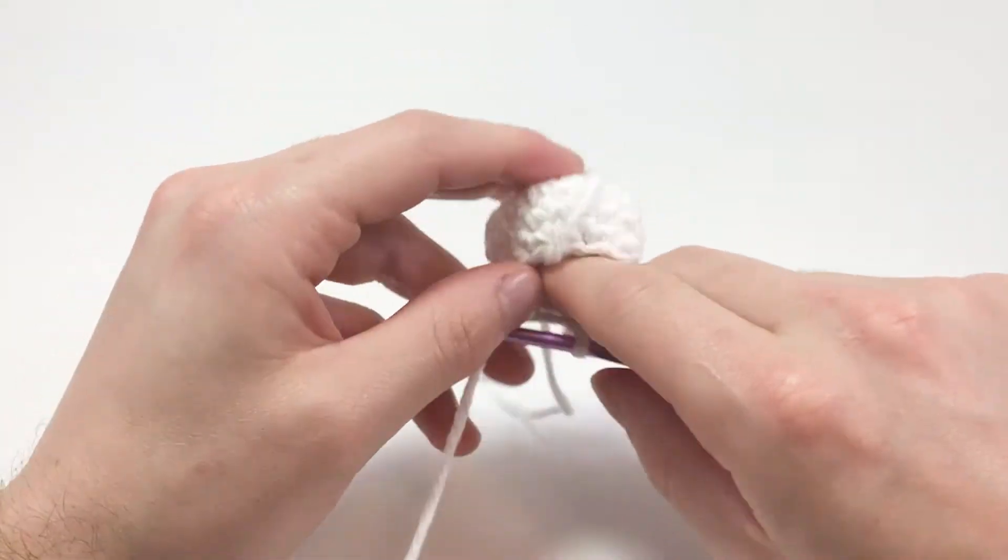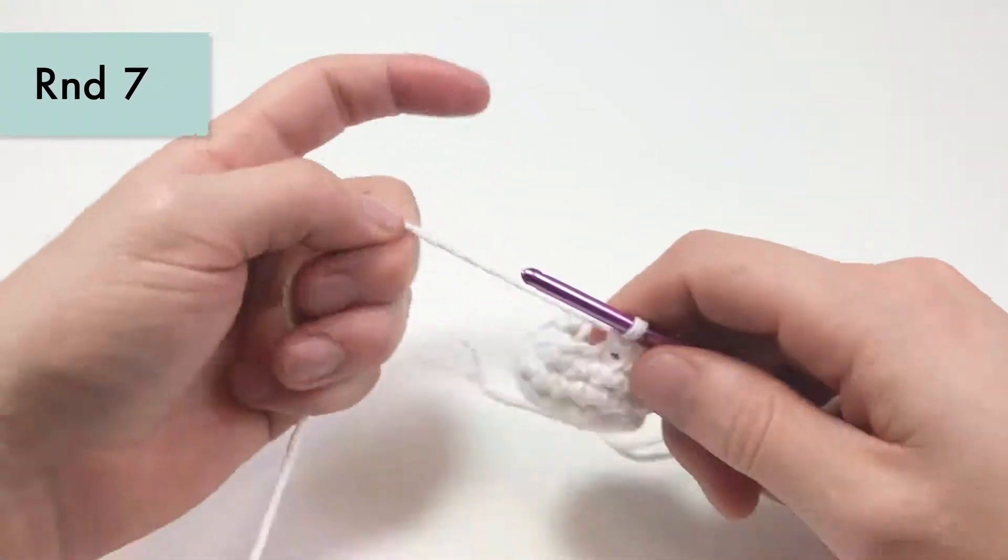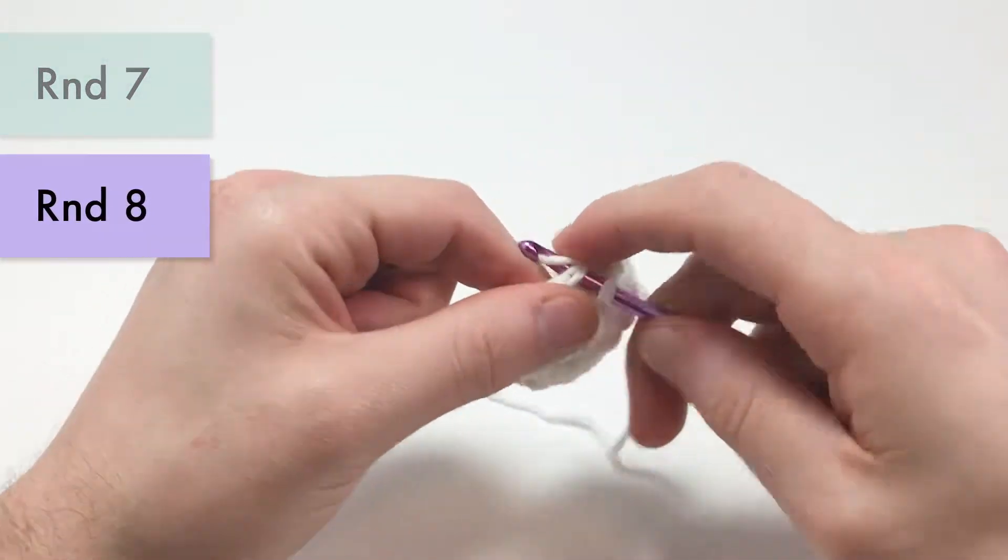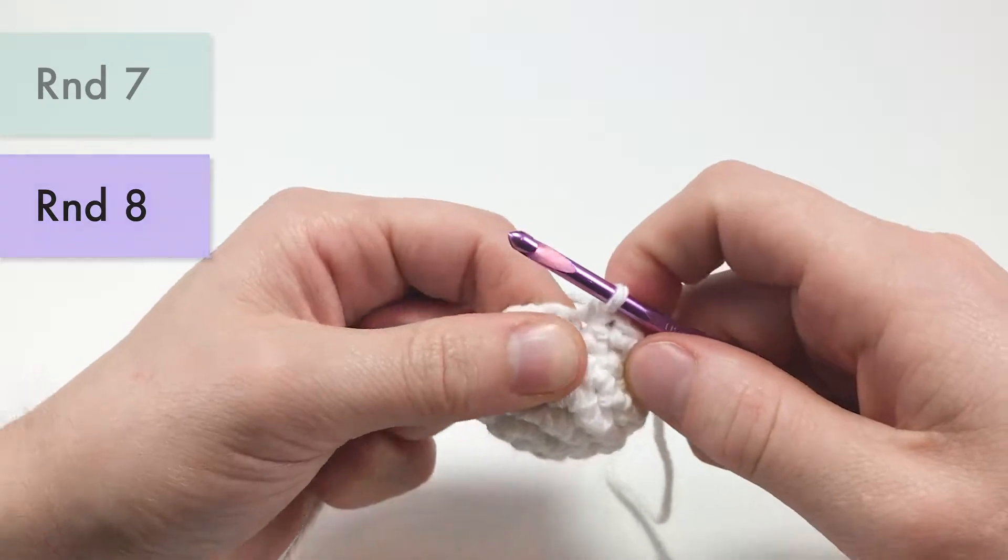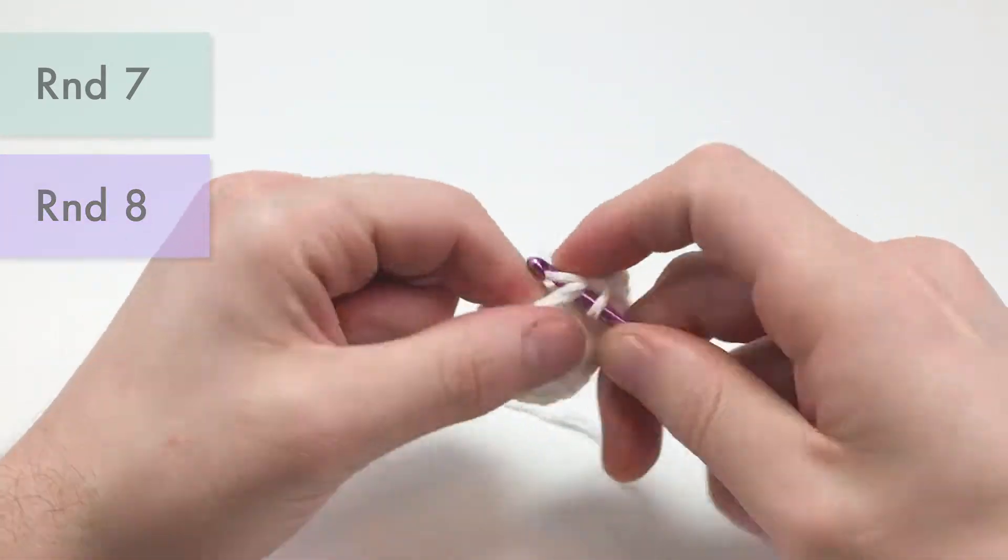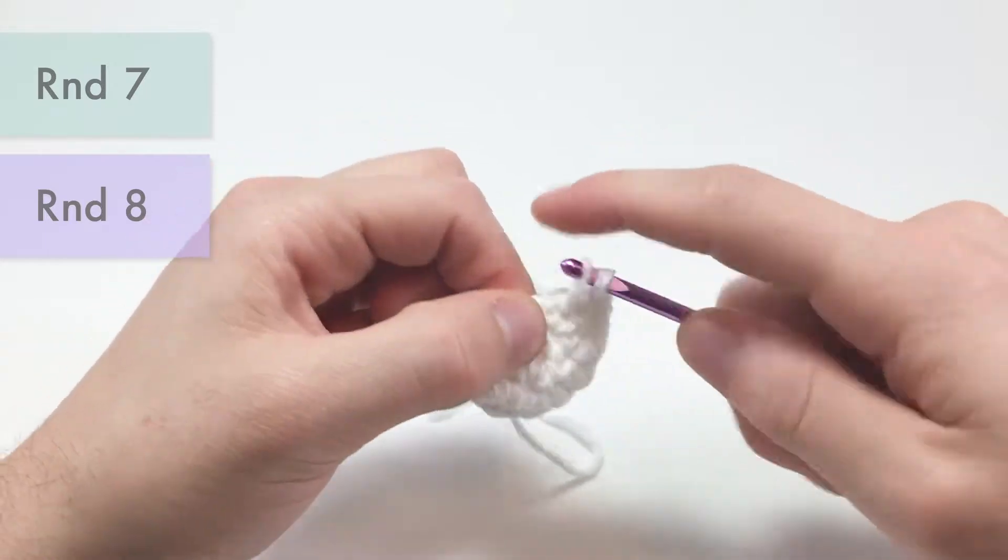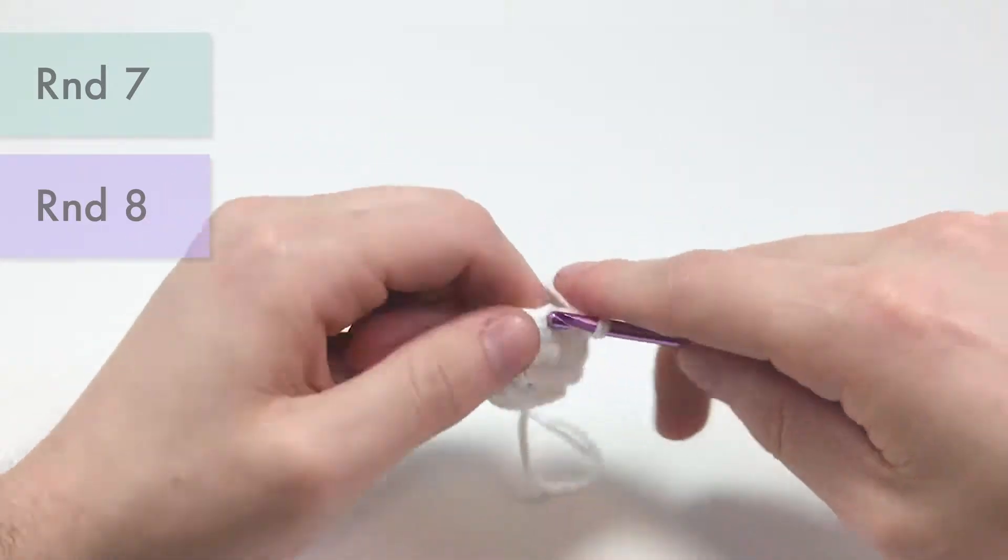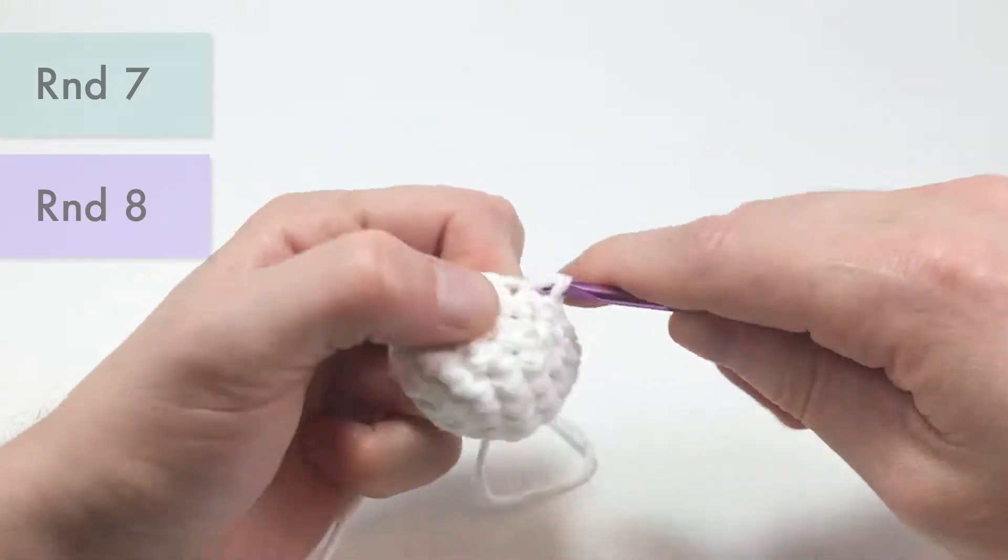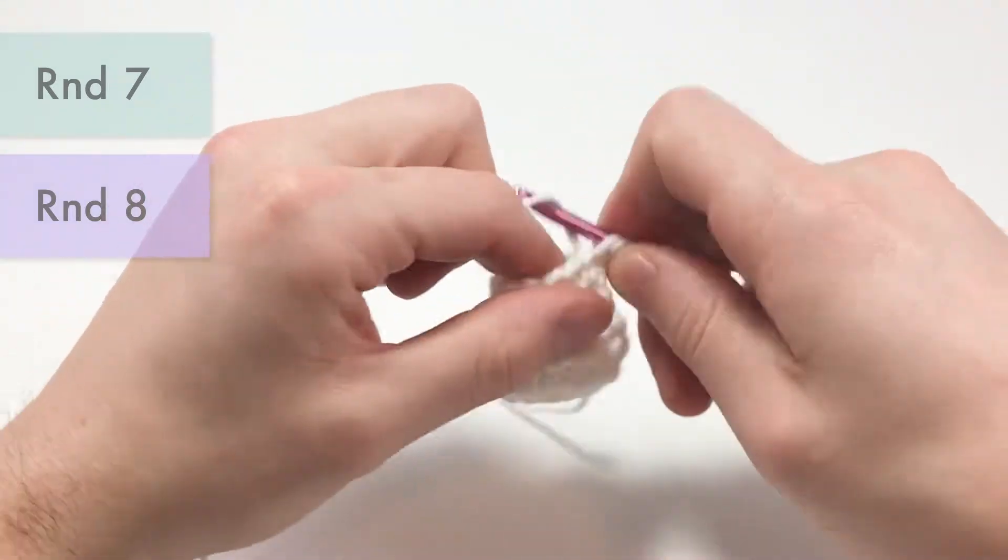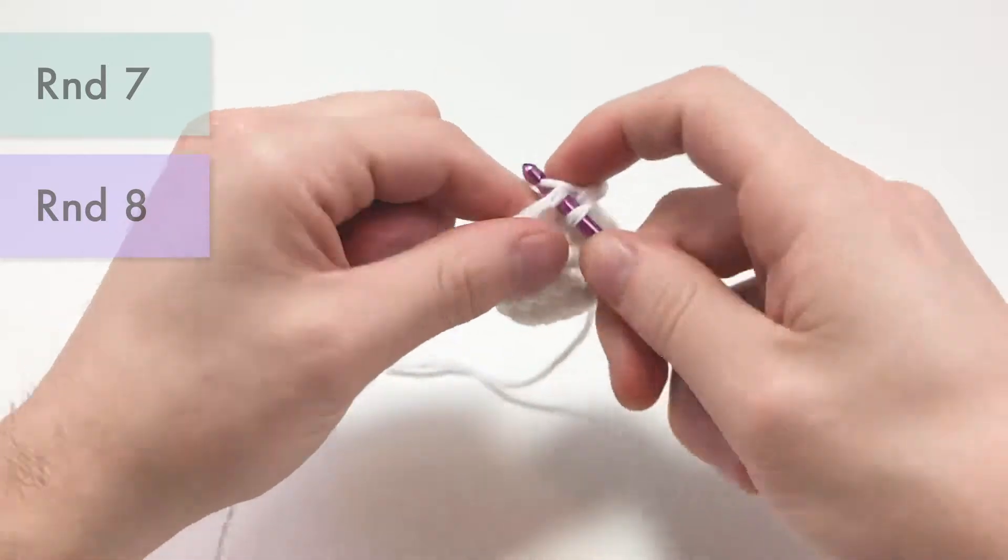So now for the next two rounds, rounds seven and eight, we'll just be single crocheting into each stitch around and there should be 12 stitches around. So into each stitch all the way around, we just single crochet one, two rounds total. So I'm just finishing up round eight.